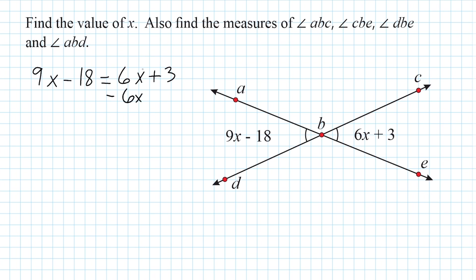That cancels out on the right side, and then we move it to the left side by doing the same thing. So we subtract 6X from 9X, which leaves us with 3X. We still have minus 18 over here, so we slide that down. That's going to be equal to positive 3.